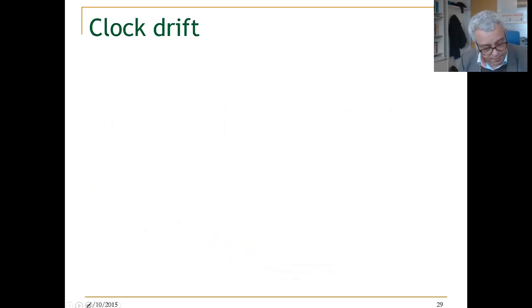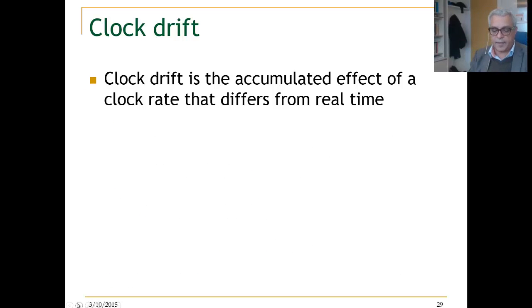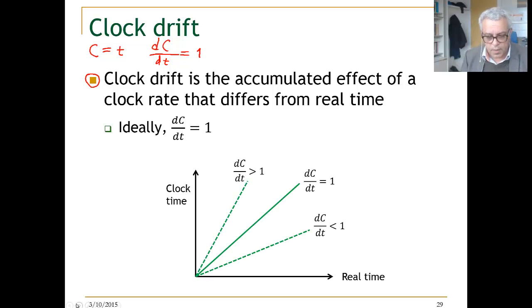The clock drift is the accumulated effect of the clock rate that differs from real time. When the derivative of C with respect to time will be 1, so C equals T means the clock does not drift, and so dC over dT will be equal to 1. Clearly. That's what we said here. Ideally the clock does not drift, and that's what we have here.